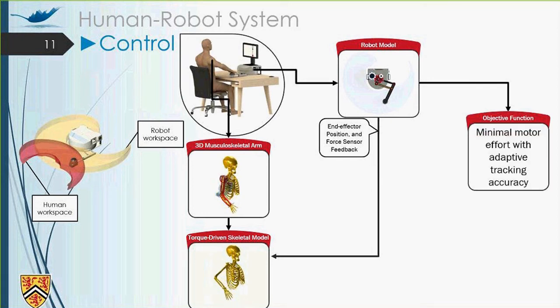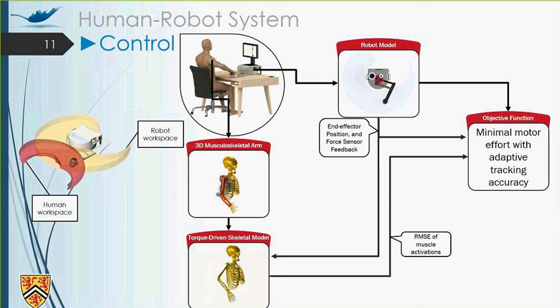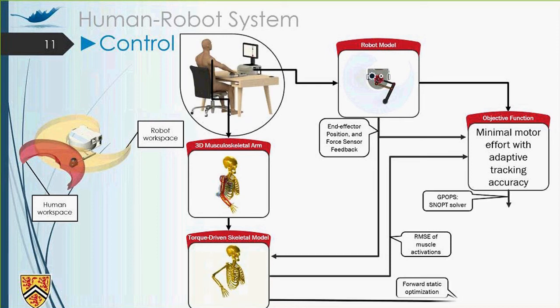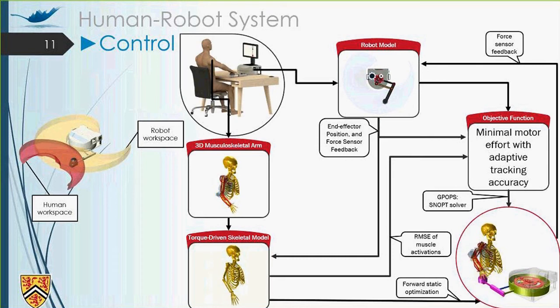We have objective function for our NMPC controller, which is minimal motor effort with adaptive tracking and accuracy. So this objective function gets the end effector position from the robot model. The torque-driven skeletal model provides the muscle activations to this objective function to adaptively change the tracking accuracy. And finally, the results of the objective function will be provided to the GPOP solver, and it will provide the control input of the robot and control the whole rehabilitation system.